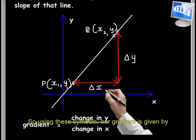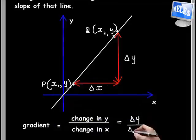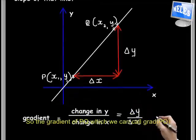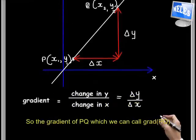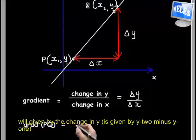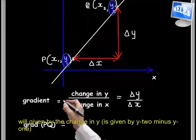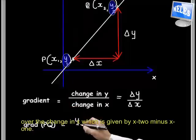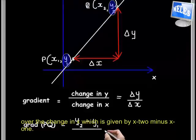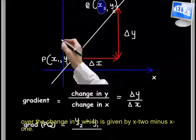So using these symbols, our gradient is given by change in y over change in x. So the gradient of PQ, which we can call grad(PQ), will be given by the change in y, which is y2 minus y1, over the change in x, which is x2 minus x1.